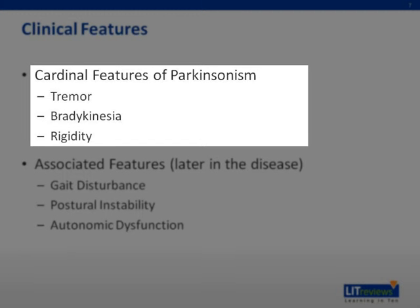The cardinal features of Parkinsonism are a triad of 4 to 5 Hertz rest tremor, bradykinesia, and rigidity. Postural instability is often considered a cardinal feature of Parkinsonism; however, it usually presents much later in the disease.